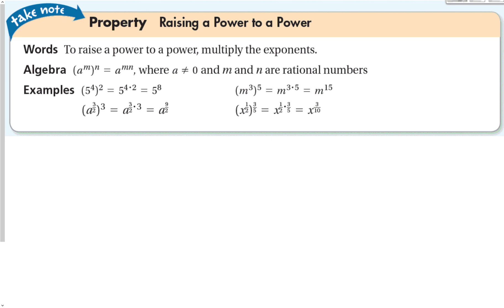Our property is: when we raise a power to a power, we multiply the exponents together. So a to the m, all to the n, becomes a to the m times n, where a is not 0 and both m and n are rational. For example, 5 to the 4th squared becomes 5 to the 8th, and n to the 3rd to the 5th becomes n to the 15th. This works with fractional exponents as well — we just multiply the fractions together.